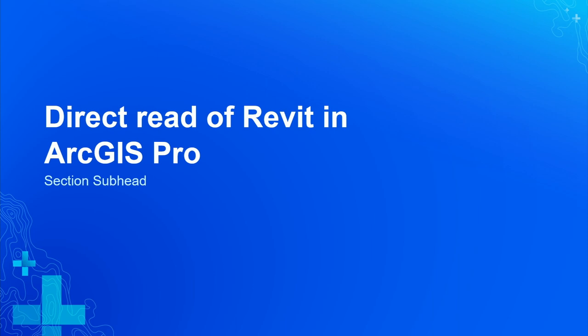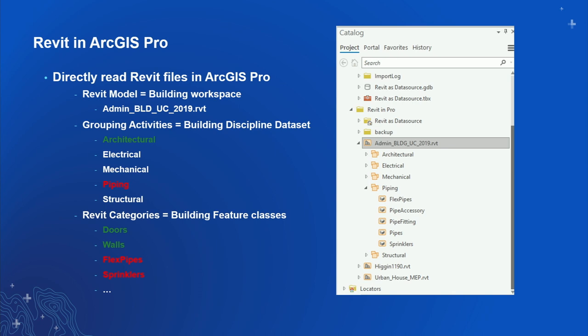For those of you who haven't seen Revit in ArcGIS Pro — here it is. When you bring up ArcGIS Pro, it shows you a Revit workspace. Within that workspace is the Revit model, which we call a building workspace. That's the RVT file. Within it we have building discipline datasets: architectural, electrical, mechanical, piping, and structural — all present in every Revit model whether populated or not. Those map down to building feature classes: your doors, walls, roof, flex pipes, sprinklers — that's how things are organized.